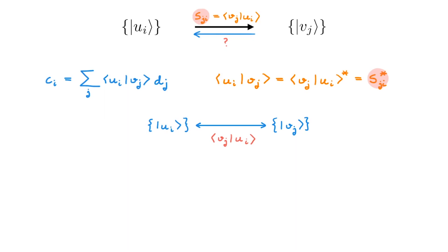The corresponding expressions for bras are now easy to obtain. We can either repeat the same exercise we have just done for kets, or we can directly transform the expressions for the kets to the dual space. Either way, I leave it to you as an exercise.